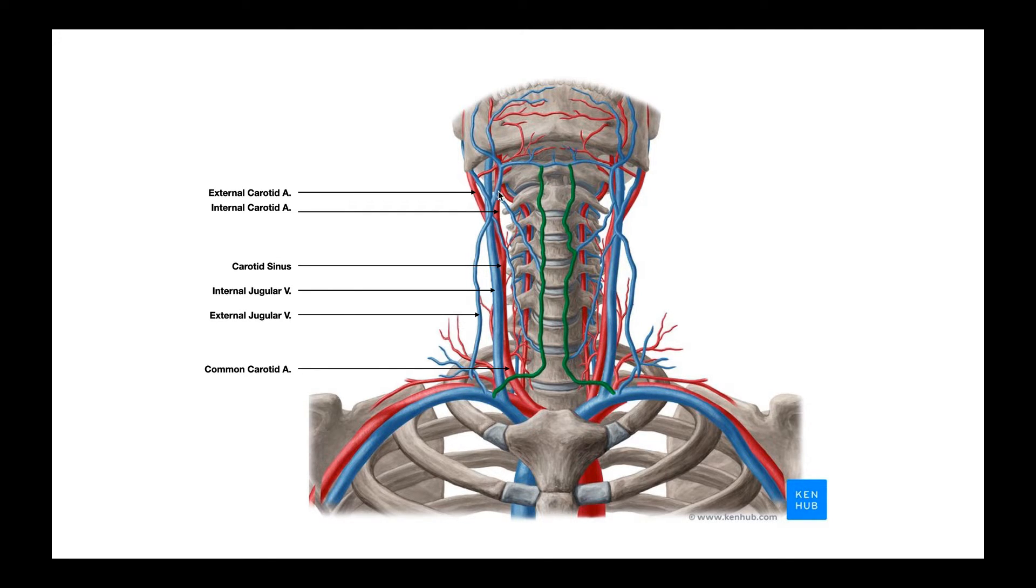So the one that goes more internal, which will actually go into the skull, is the internal carotid artery. So we could probably speculate that that internal carotid artery brings blood to the brain. But there's also an external carotid artery that goes outside of the skull. And so any structure outside the skull, for example, your facial musculature, frontalis muscle, occipitalis, those are ultimately supplied by the external carotid artery.